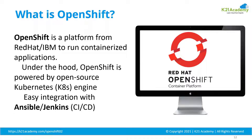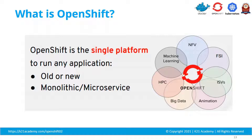OpenShift is essentially the enterprise version of Kubernetes — you can call it the paid version — so customers don't have to worry about managing Kubernetes separately or plugging in 10 to 20 different things. OpenShift is a single platform where you can run your old applications, new applications, microservices, and monolithic applications.